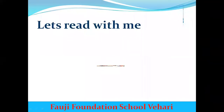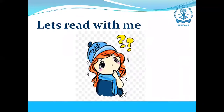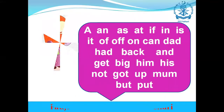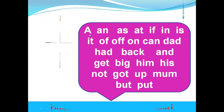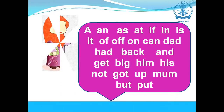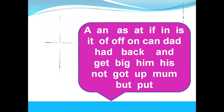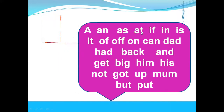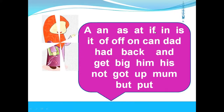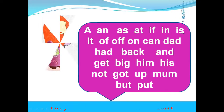I hope you have understood the meanings of these words. So let's read with me. Open your book, chapter number two — English ka chapter number two open karein. The words in this chapter, we have to read them and learn their pronunciations. The first word is: a, an, as, at, if, in, is.